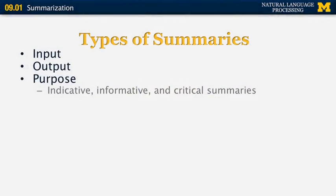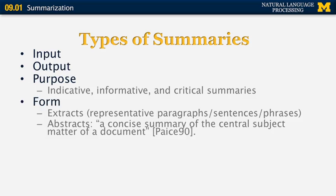There can also be something called critical summaries, where you are summarizing a book or a movie but also giving some subjective information about how you feel about it. The form can be either extractive or abstractive. Extracts are usually representative paragraphs, sentences, or phrases from a document, whereas abstracts can be reformulated using different words and are, to quote from a Paice paper from 1990, a concise summary of the central subject matter of a document.